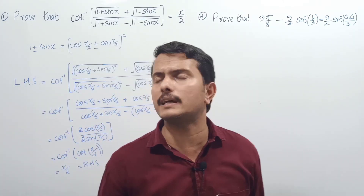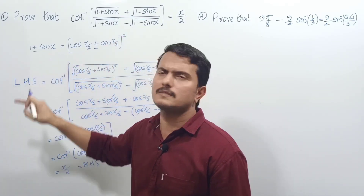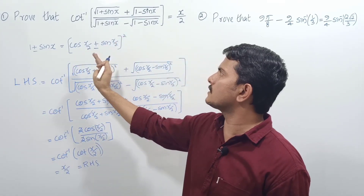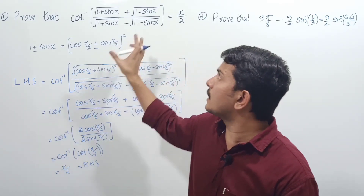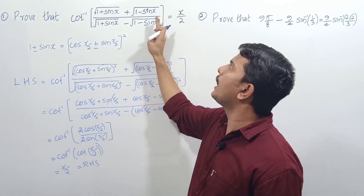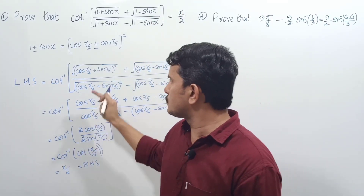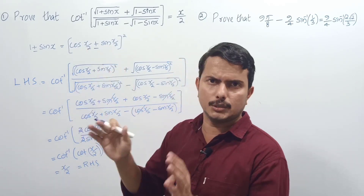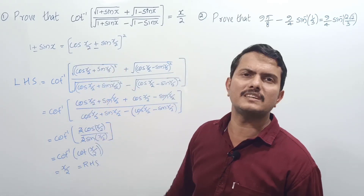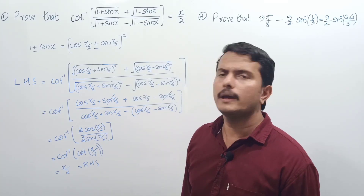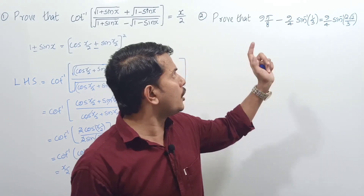What we have to remember: rewrite 1+sinx as (cos(x/2)+sin(x/2))² and 1-sinx as (cos(x/2)-sin(x/2))². There is another method — taking the conjugate and multiplying numerator and denominator — but using this substitution, you get the answer x/2 in just two or three steps.